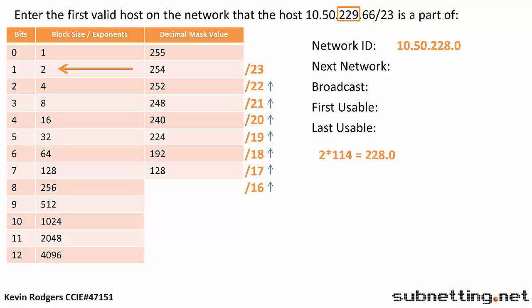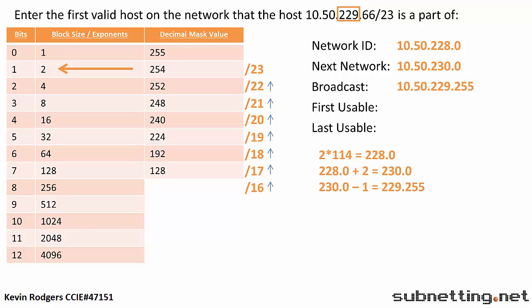We can now find our next network. 228, which is our network ID, plus the block size of 2 equals 230. The next network is 10.50.230.0. Next up is the broadcast address. To find the broadcast address, we simply take the next network and subtract 1. Our broadcast address is 10.50.229.255.